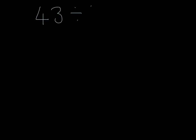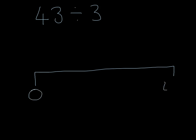Let's take a harder sum this time. 43 divided by 3. We need to start with our number line again, from 0 to 43. This time we don't want to chunk in groups of 3, because it will take us a long time to reach our target of 43. So let's start with a group of 10. 10 lots of 3 is 30.